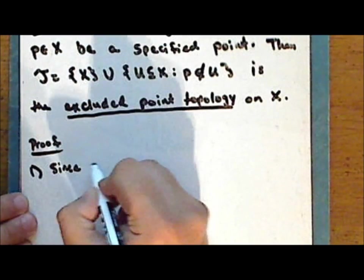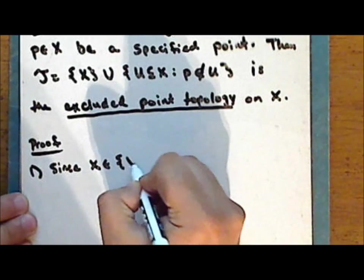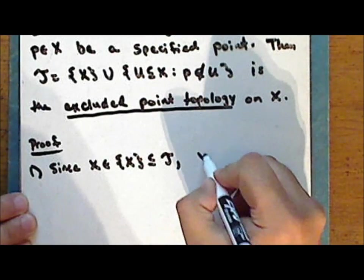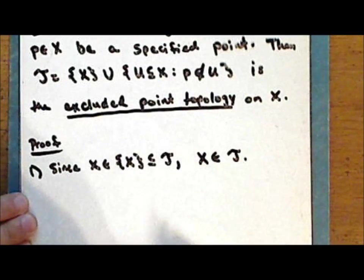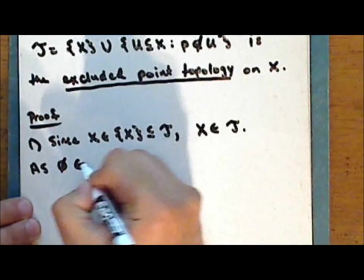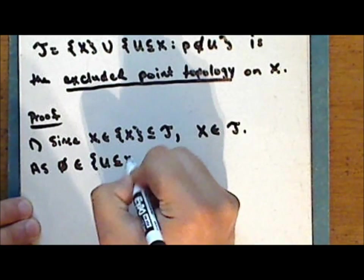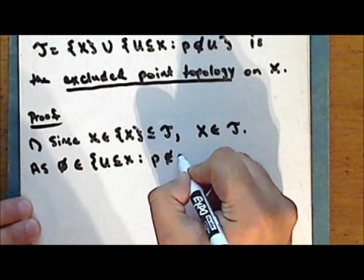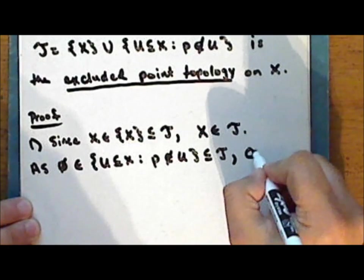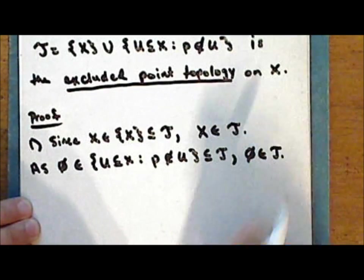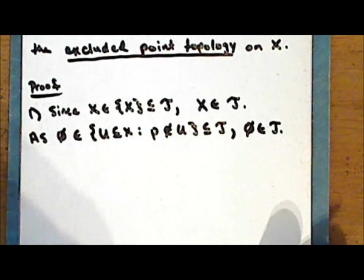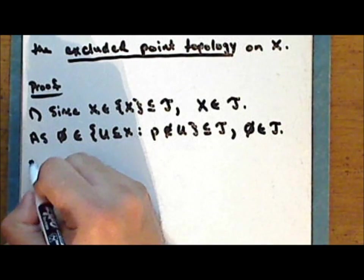Since the entire set is in the set which contains the entire set, which is a subset of the collection tau, we have that the entire set is in the collection tau. And as the empty set is a subset of the set X that does not contain the point P, and this is a subset of the collection tau, we have that the empty set is in the collection tau. So both the entire set and the empty set are in the collection tau, and the first condition is satisfied.